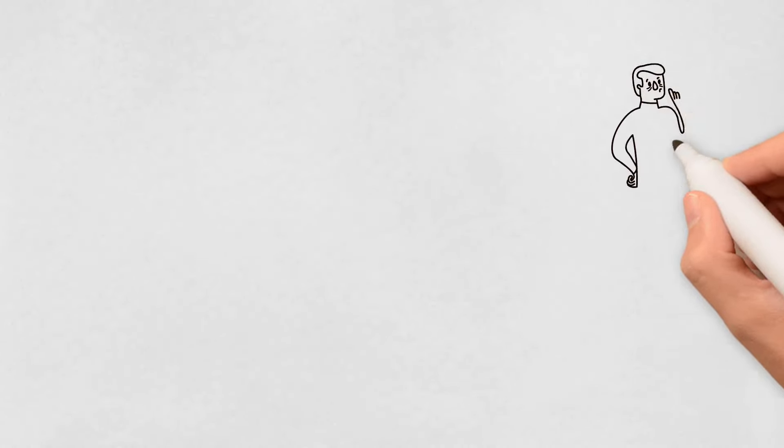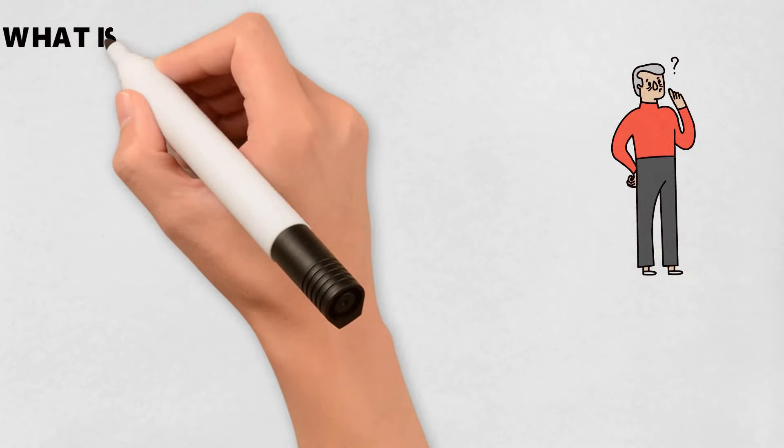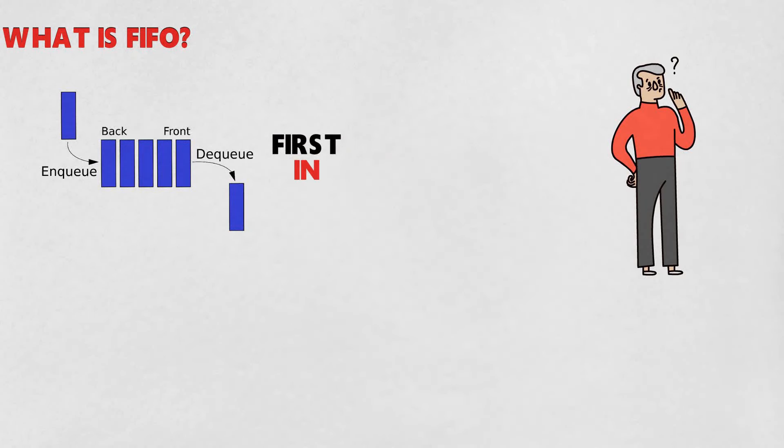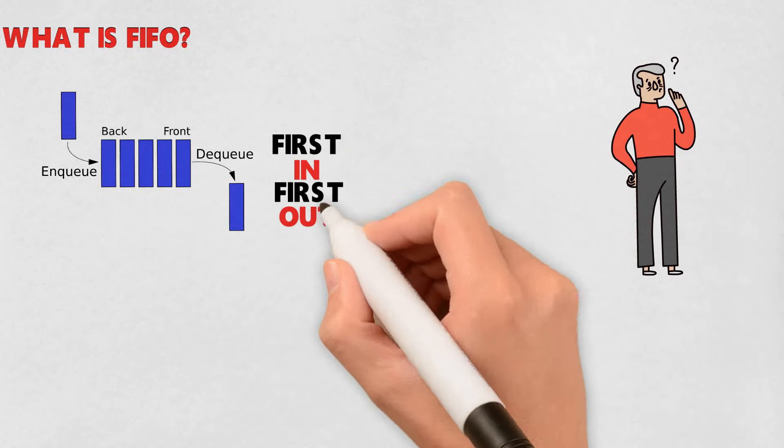So first, the question may arise: what is FIFO? FIFO, an acronym for first in first out, is a method for organizing the manipulation of a data structure.